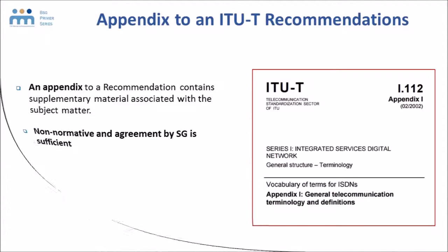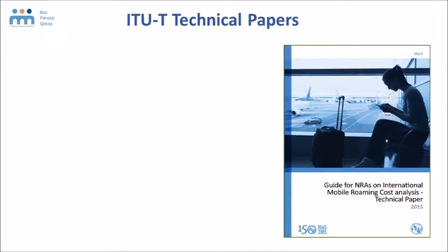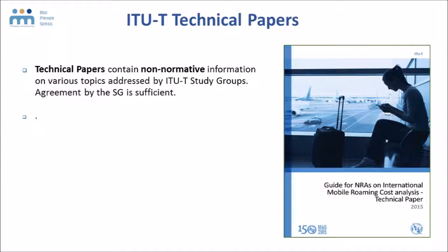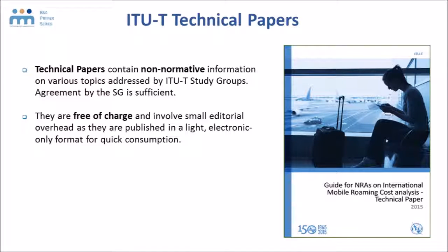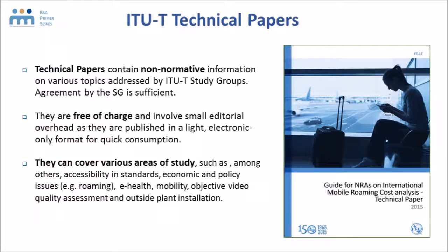Finally, ITU-T technical papers are also an important output of study groups. These are non-normative and provide information on various topics addressed by the study groups. They're free of charge and involve small editorial overhead. They can cover various areas of study — examples include accessibility, economic and policy issues such as international mobile roaming, e-health, mobility, outside plant installation, and so on.